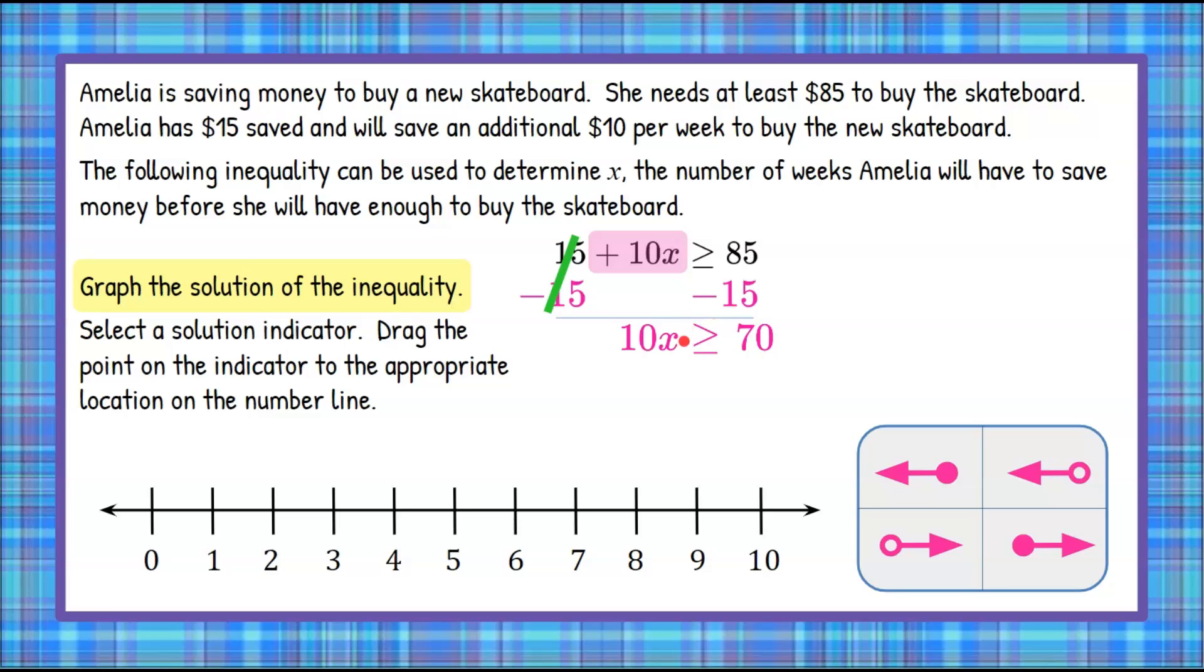We're not done because we still want to know what just x is equal to, not 10x. So we want to solve for x, so we have to undo multiply by 10. The inverse of multiplying by 10 is to divide each side of the inequality by 10. 10 ÷ 10 is 1. 1x is x. Bring down our inequality symbol. 70 ÷ 10 is 7.